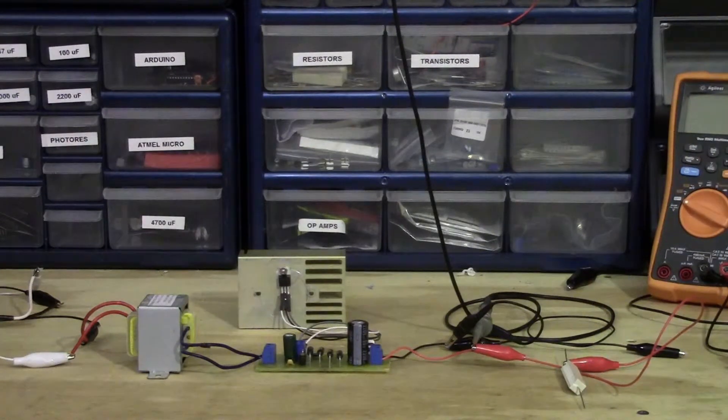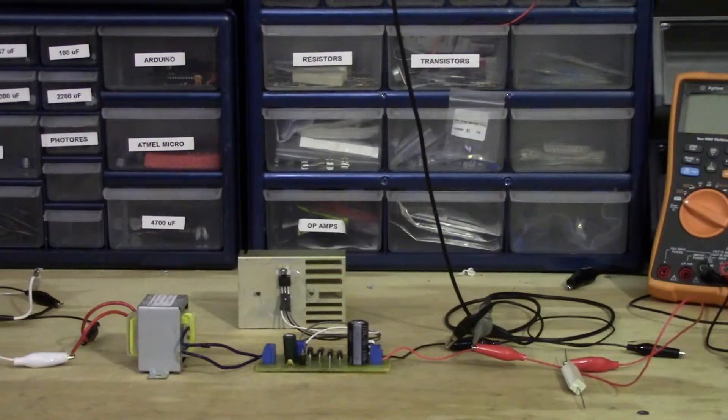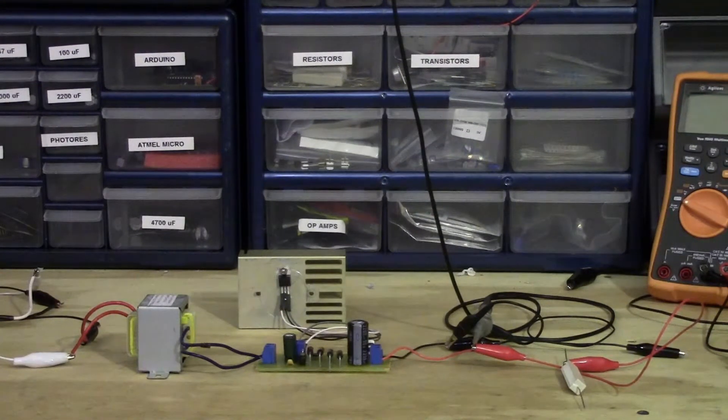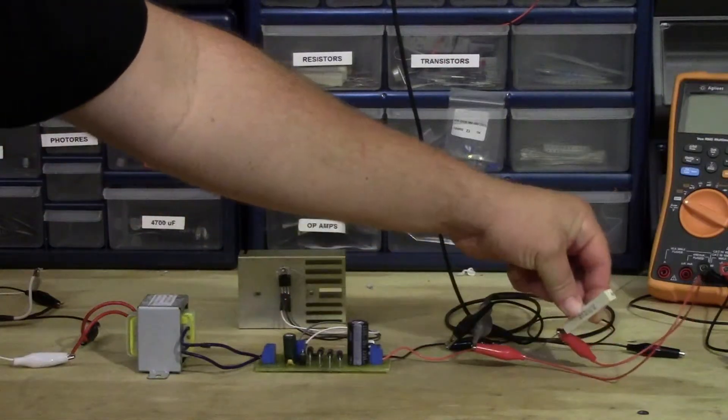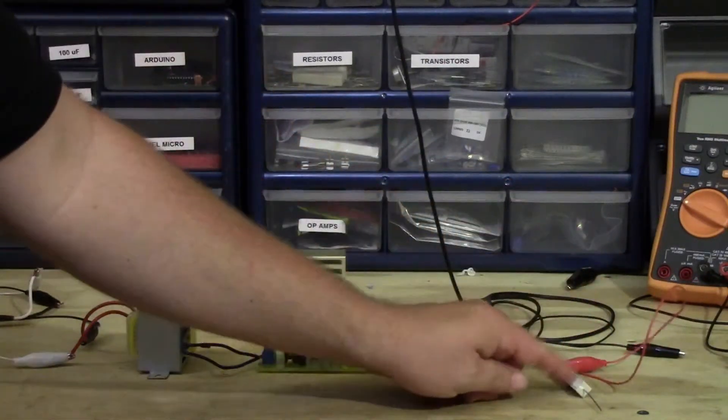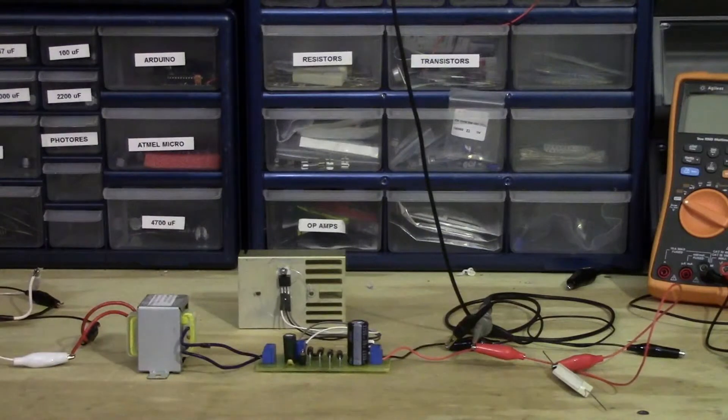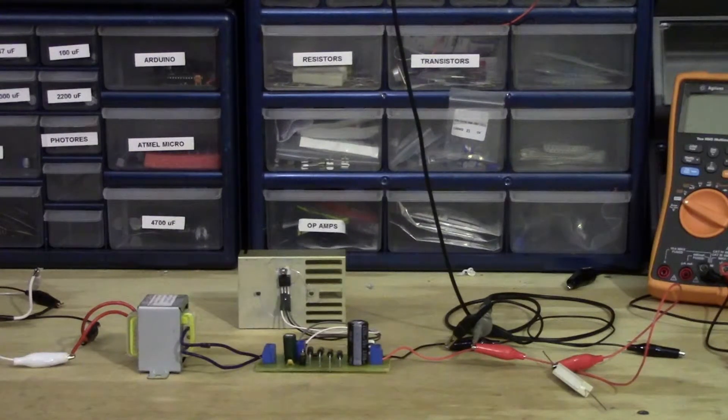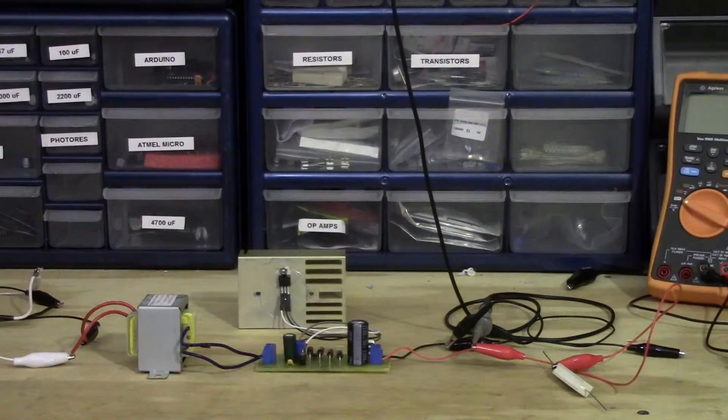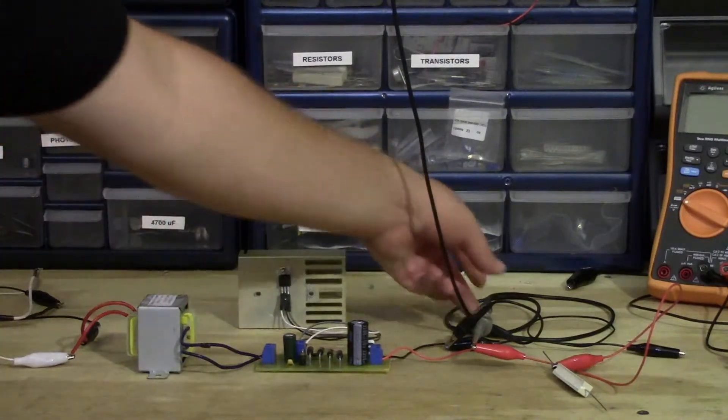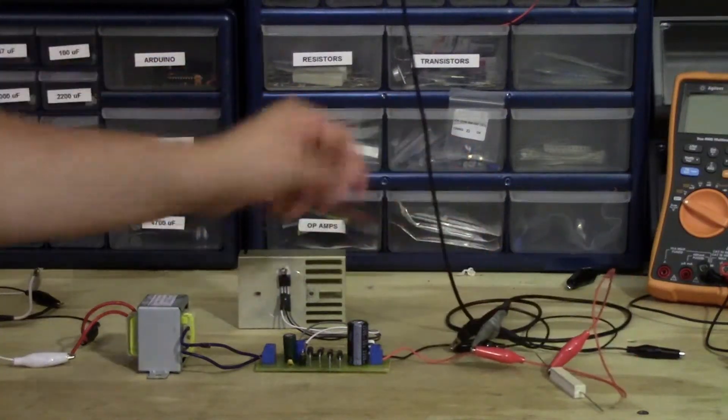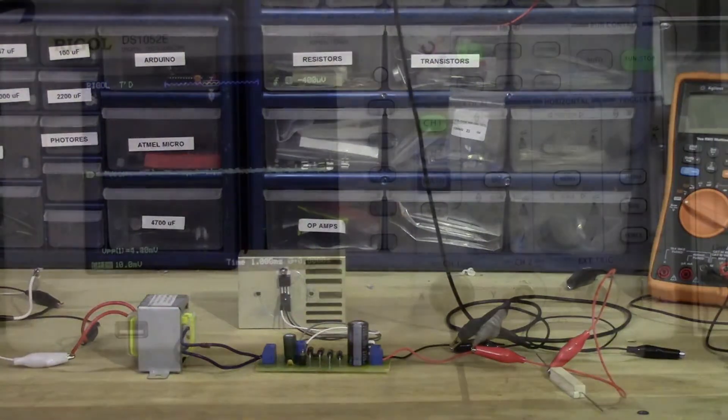So the last thing I want to take a look at is the ripple on the DC output. To do that I've replaced the constant current dummy load with a 10 ohm power resistor. The reason for this is I won't get as much noise introduced from the dummy load resistor versus the circuitry in the constant current. I've also got my oscilloscope probe connected directly to the output of our supply module.